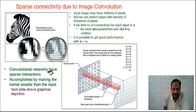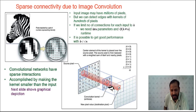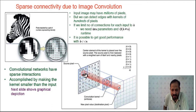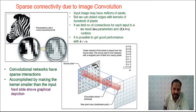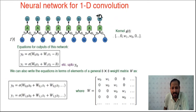Convolution networks have sparse interaction accomplished by making the kernel smaller than the input image. At any instant, the kernel interacts with only a small 3×3 portion — nine pixels. At another instant, another nine pixels. So there is sparse interaction, not full interaction with the entire image simultaneously. That is why this is called sparse interaction.